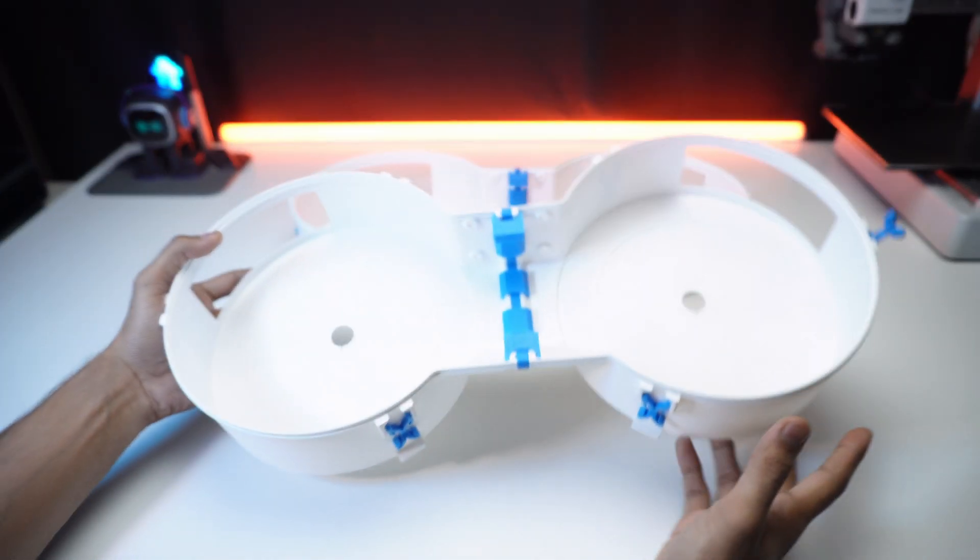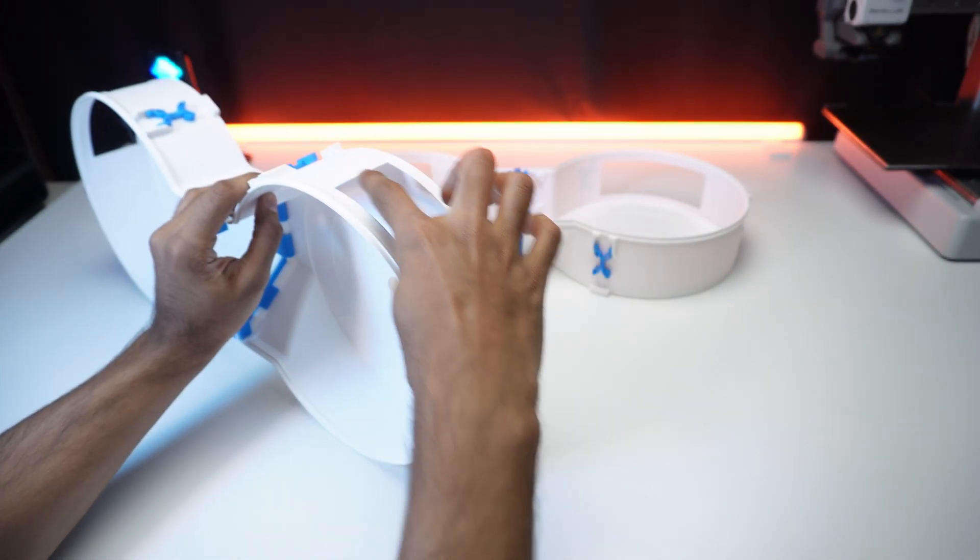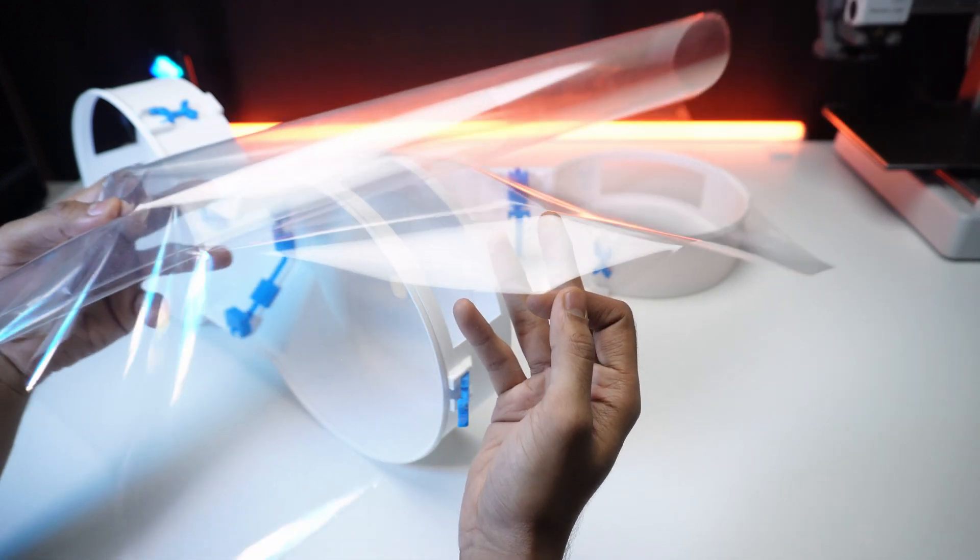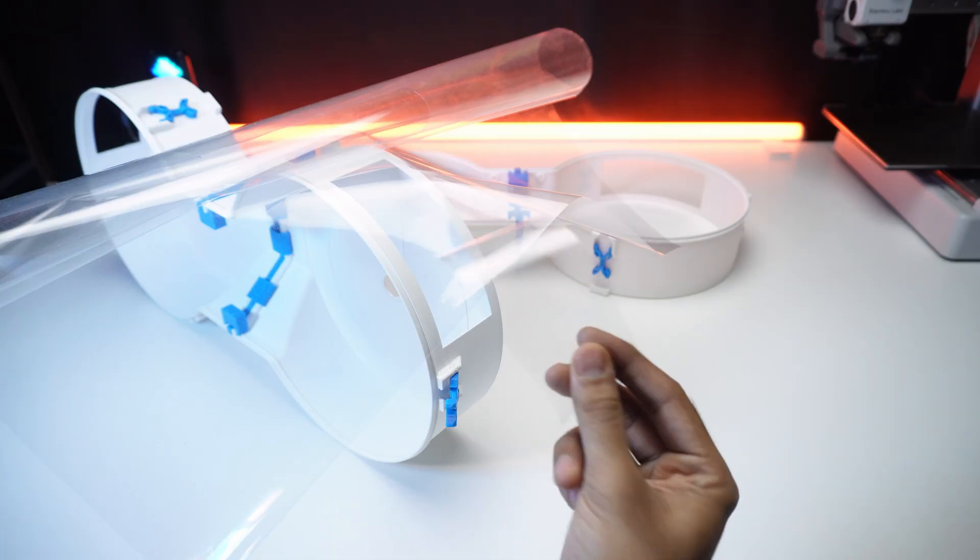Now our bucket sets are ready. It's time to cover the windows of each bucket. I'm using this transparent plastic sheet, but you can also use two inch wide nano tape. Cover all four bucket windows with these sheets.